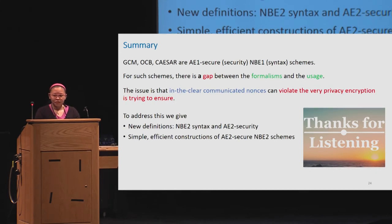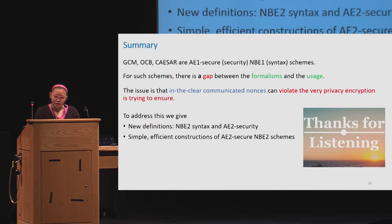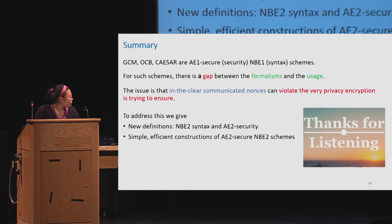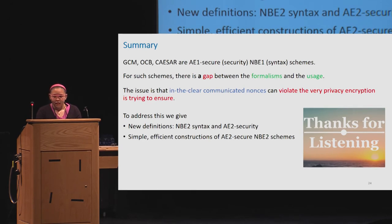A questioner challenges the threat model, asking: if the sender is trying to leak data and everyone is internet-connected, what's the point of stopping the nonce from leaking? The response clarifies: we're not saying anyone is setting the nonce to be the hash of the message. But even counters reveal information not captured in the model — for instance, a counter differentiates between a stream sending many packets versus very few packets. The questioner counters that there are five metadata fields and this addresses only one of them, leading to a decision to take the discussion offline.